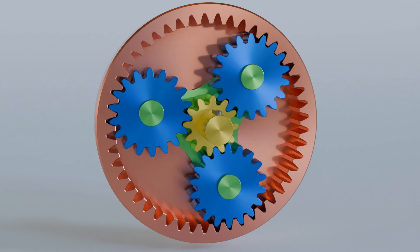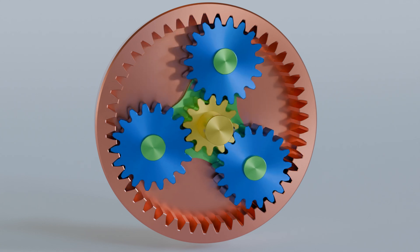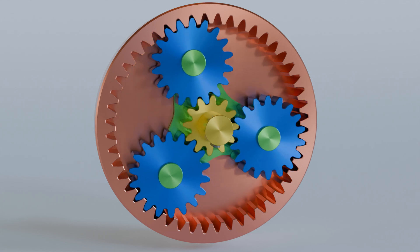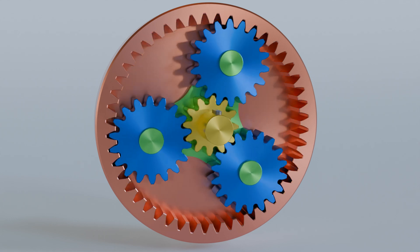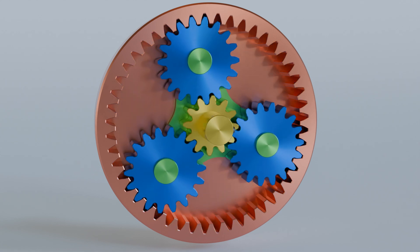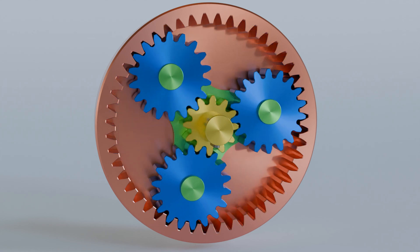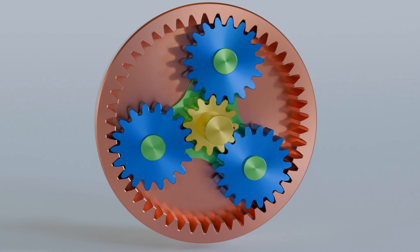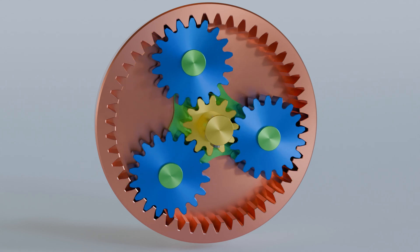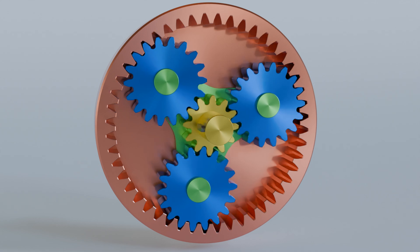With a planetary gear, it is not only possible to lock the ring gear and have the output take place using the carrier. There are many other possible variants, which each result in a different transmission ratio. This makes the planetary gearbox particularly suitable for shiftable transmissions, such as in hub gears of bicycles or in automatic transmissions of motor vehicles. The advantage of a planetary gear compared to a conventional stationary gearbox is the compact design and the advantage that all shafts are arranged coaxially. For very large transmission ratios, several planetary gearboxes can also be connected in series.